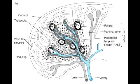When talking about the anatomy of the spleen, we will start off talking about the capsule. Here we see the capsule, the trabecula, and the vascular sinusoid, which is in the red pulp. We also see the white pulp, which consists of the follicle, marginal zone, and the peri-arterial lymphatic sheath, also known as PALS.